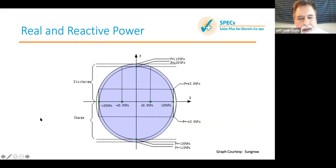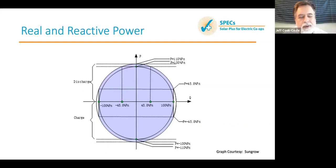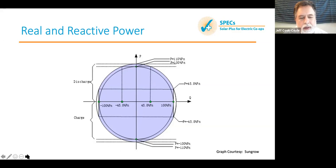PN is the nominal power output — the rated output. It shows you can go 10% above the rated output for both charging and discharging. The 100% inner circle is the rated output.